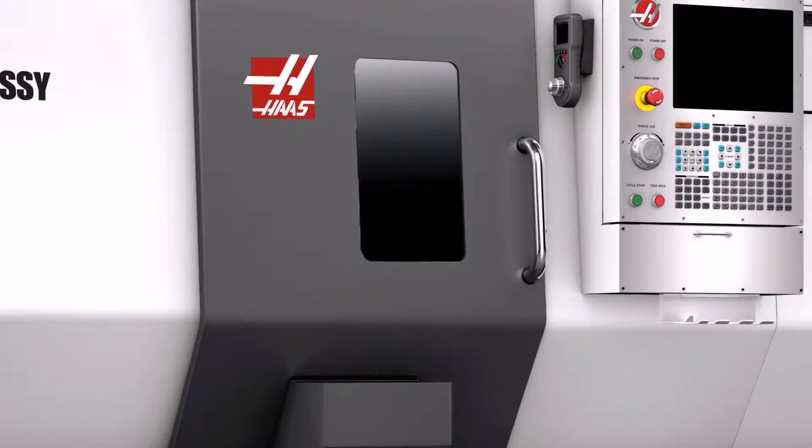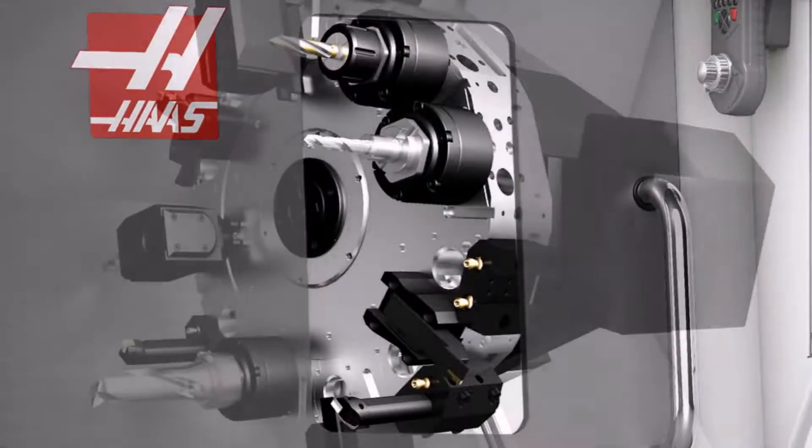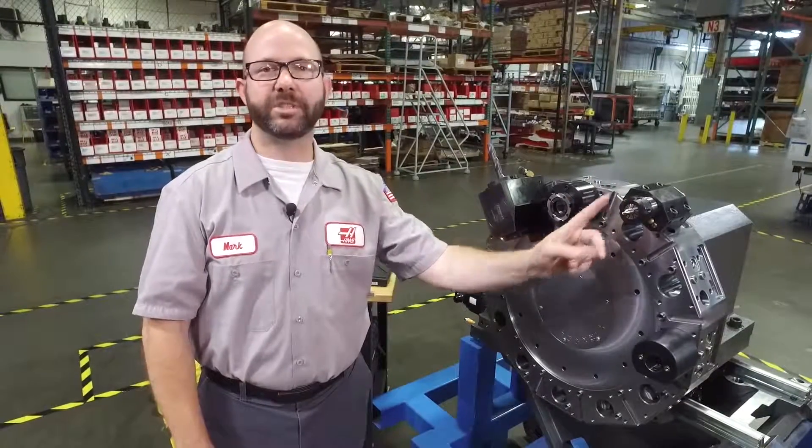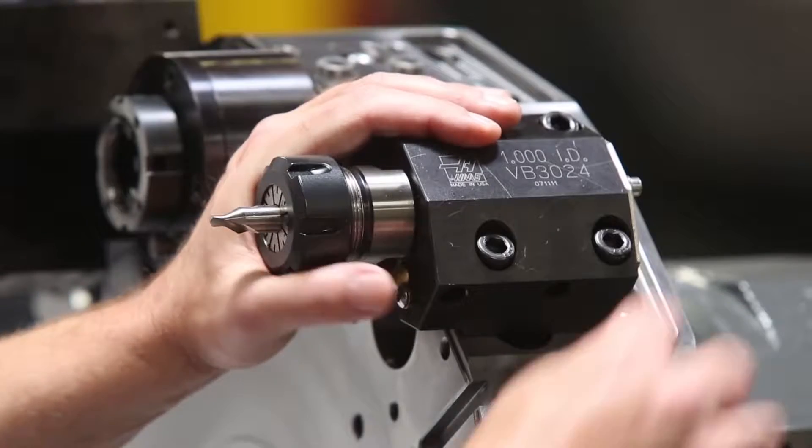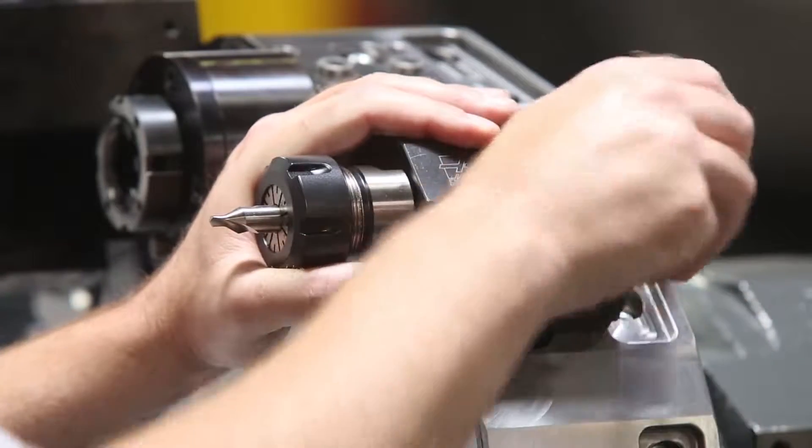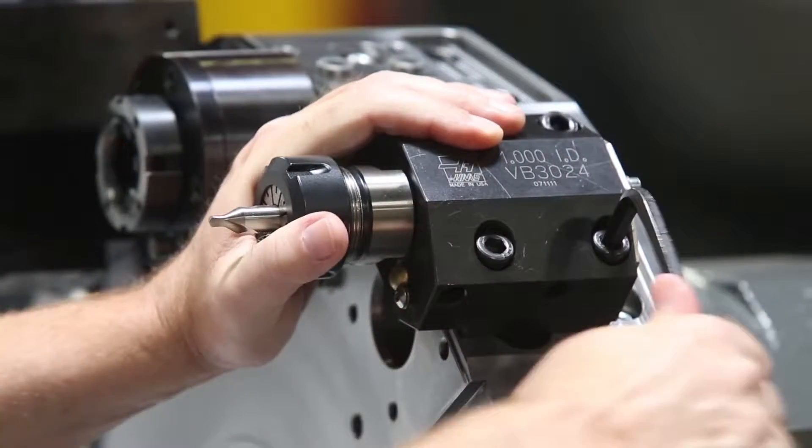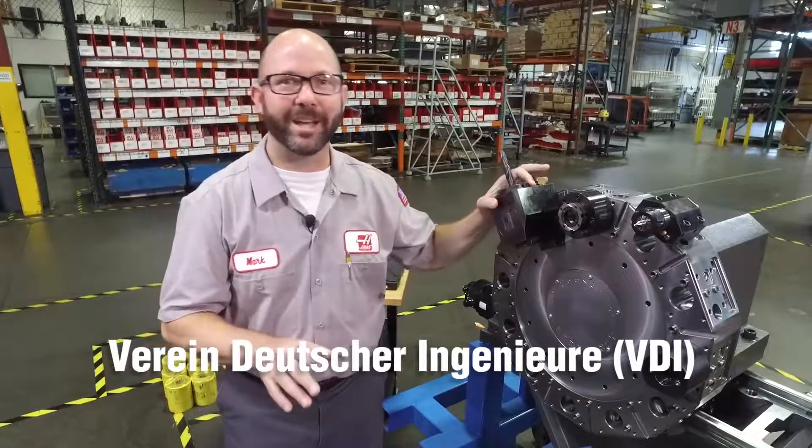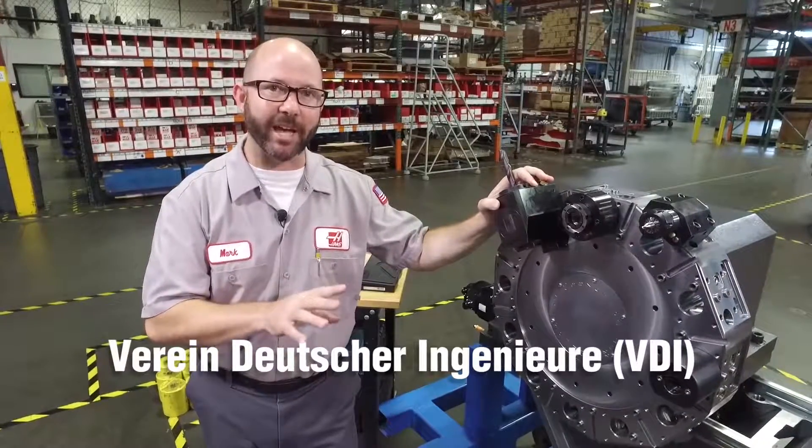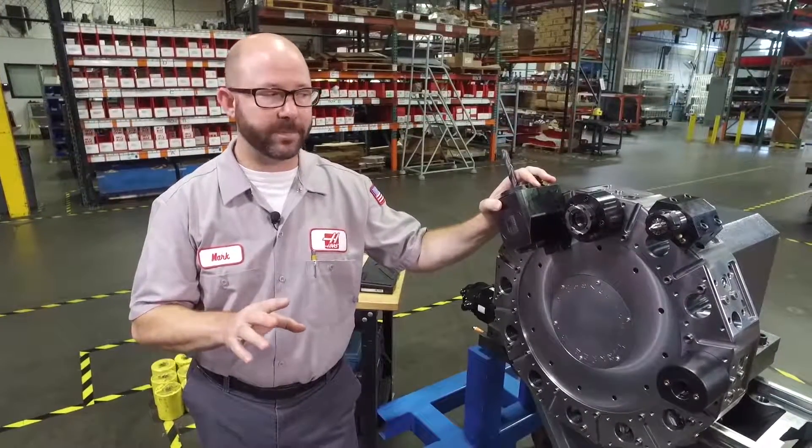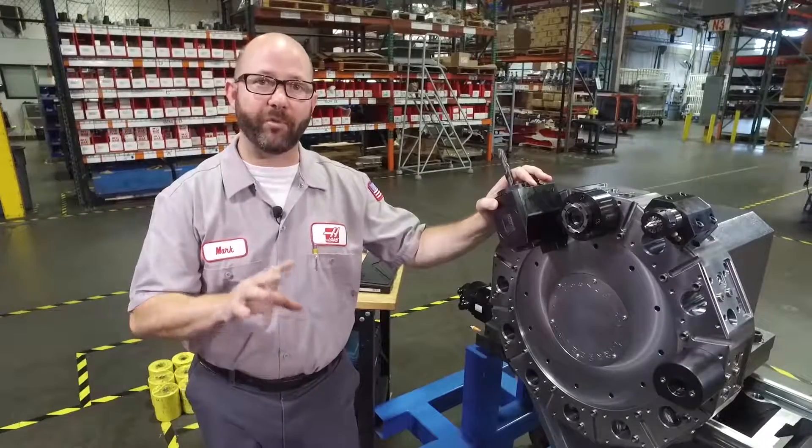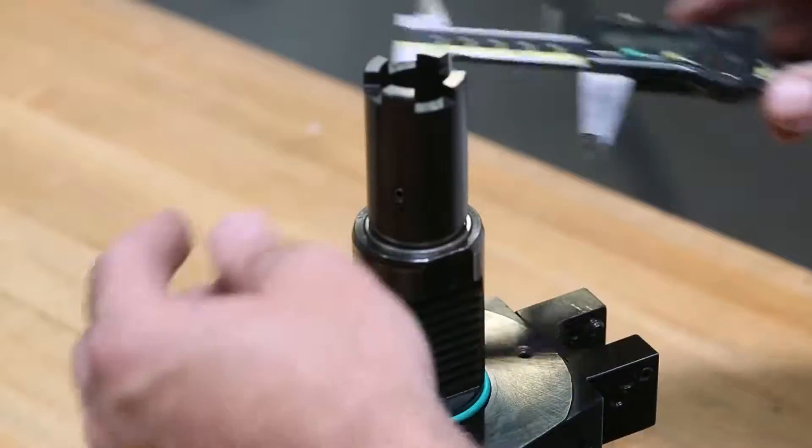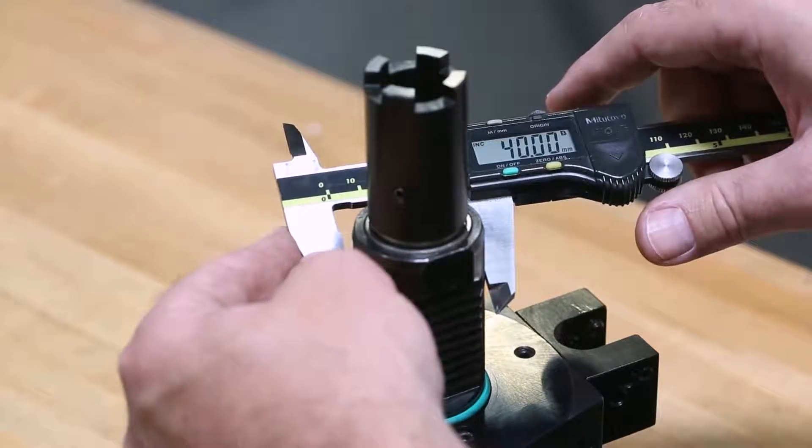This one has 12 VDI40 holders along with 12 VOT holders. Now VOT stands for bolt on tooling because they bolt along the outside of our turret. Now what does VDI stand for? Well it's German and I'm not going to try and pronounce it for you. Essentially it stands for Society of German Engineers. Now the 40 in VDI40 stands for 40 millimeters. That just means that the shank on our VDI tooling is 40 millimeters diameter.